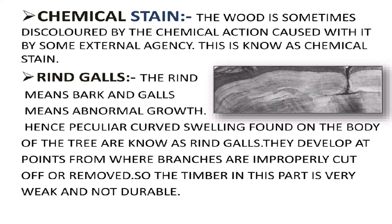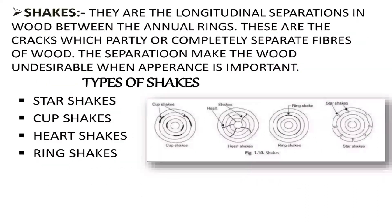Rind galls: 'rind' means bark and 'galls' means abnormal growths. So the abnormal growths in the bark are called rind galls. Shakes are longitudinal separations in wood between the annual rings. These are cracks which partly or completely separate fibers of wood, making the wood undesirable when appearance is important. Types of shakes are: star shakes, cup shakes, heart shakes, and ring shakes.